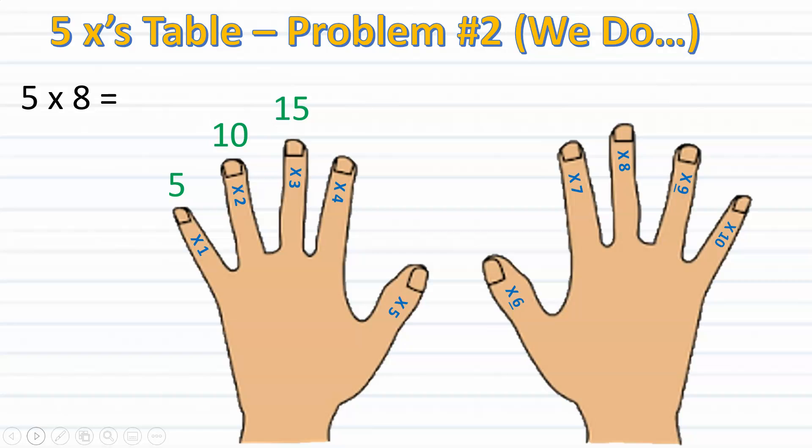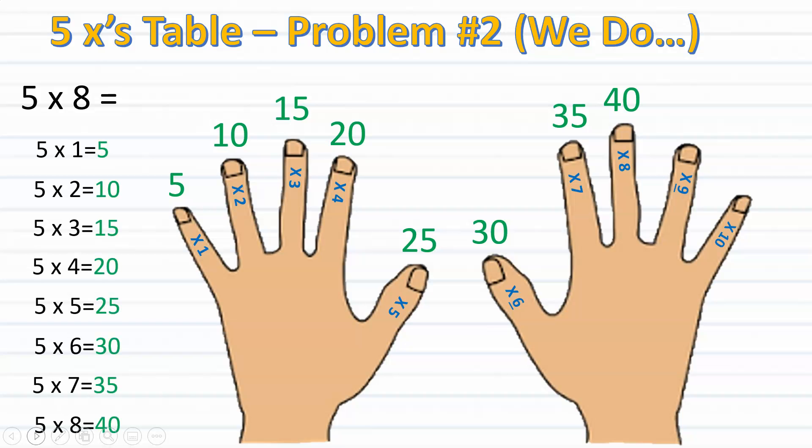So sing along with 5, 10, 15, 20, 25, 30, 35, 40. Notice again that I stopped at my eighth finger since I was multiplying 5 times 8. Since 40 was the last number that I said when I landed on my eighth finger, I know that 5 times 8 equals 40.